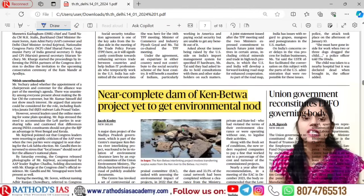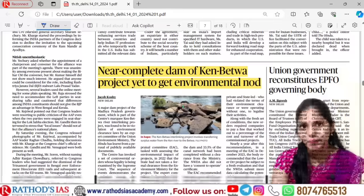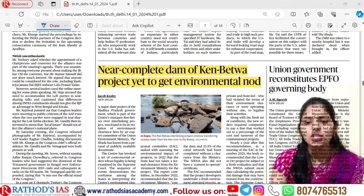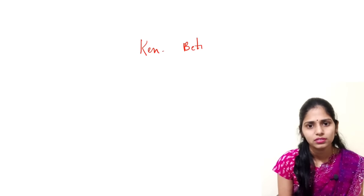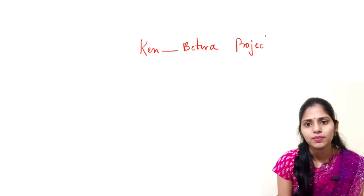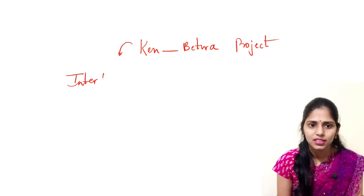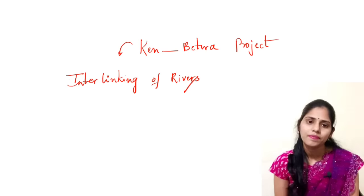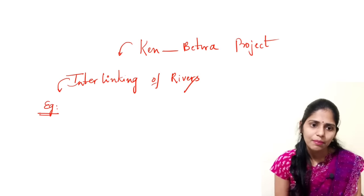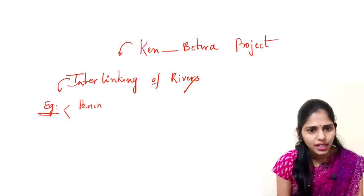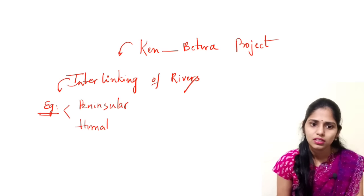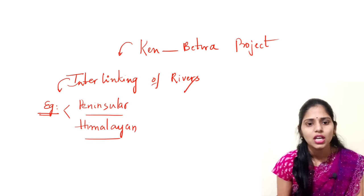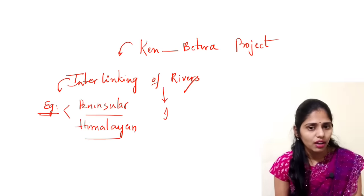The next topic is also very important: 'Near complete dam of Ken Betwa project yet to get environmental nod.' There is one issue going on with this Ken Betwa project. This topic is important from the interlinking of rivers perspective. You have to see some examples of interlinking of rivers — peninsular rivers and Himalayan rivers — and see what the issues are whenever we are interlinking two rivers.